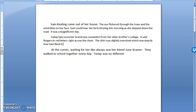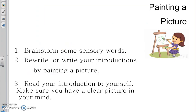That is the point of this. You want to be able to describe a scene as your introduction — use as many sensory details as you can. Let's recap before we move on. When you write your introduction by painting a picture, here are your steps. One: brainstorm some sensory words — what are you going to see, feel, smell, or hear. Number two: rewrite or write your introduction by painting a picture. And three: make sure you read your introduction to yourself and make sure you have a clear picture in your mind. Good luck choosing this lead strategy.